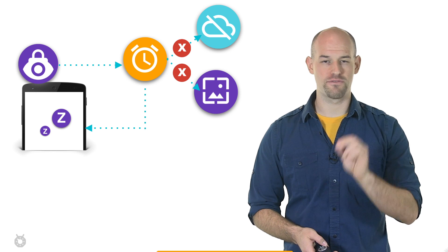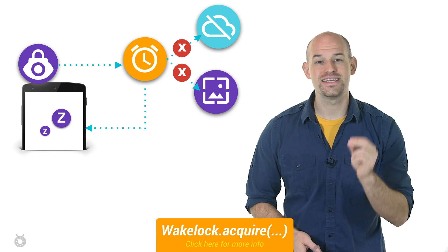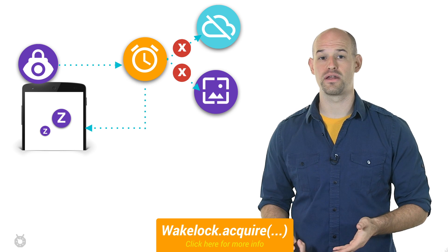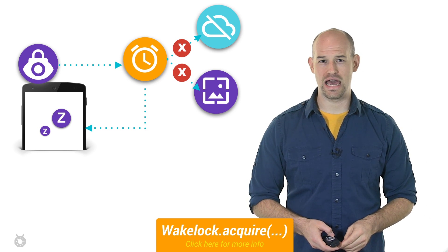The end result is the phone never sleeps and chews through your battery, which is exactly why you should be using the version of wakelock.acquire that takes a timeout parameter. This will force the wake lock to be released after a certain amount of time, just in case one of these edge cases actually happens.